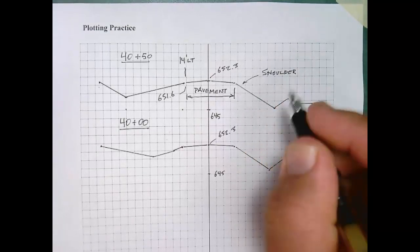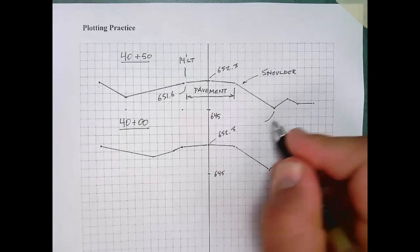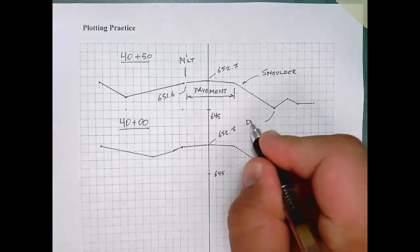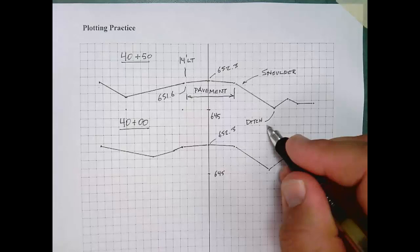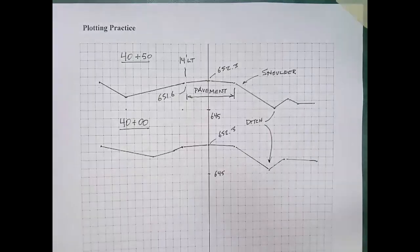In some cases, the shoulder is just bare earth. Sometimes it is an aggregate or crushed stone surface on a two-lane highway like this.